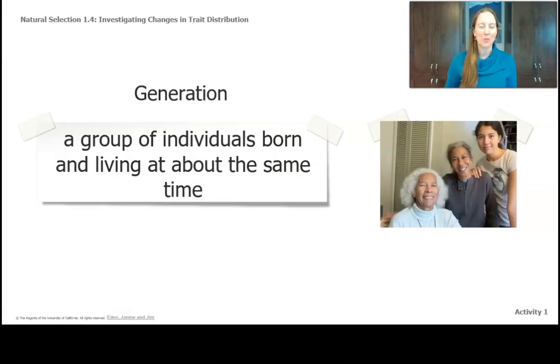The next word to add to our growing list of vocabulary for natural selection is generation. Generation is a group of individuals born and living at about the same time. So you can think of you and if you have any brothers or sisters, you're a generation, your parents are another generation, your grandparents another generation, your great-great-grandparents another generation. And so those groups living at about the same time is a generation.